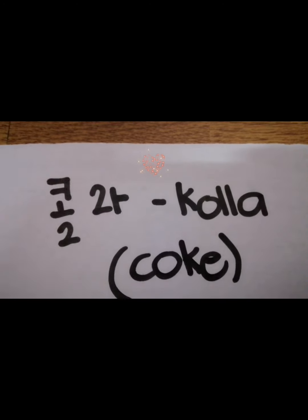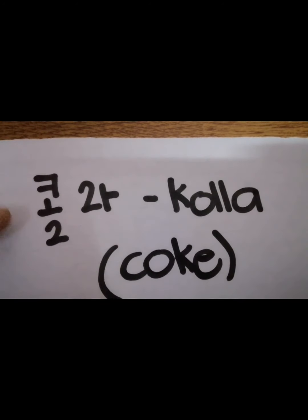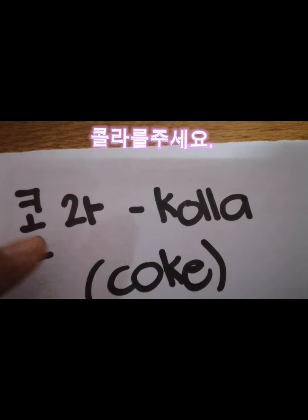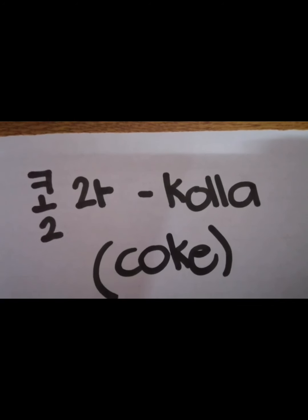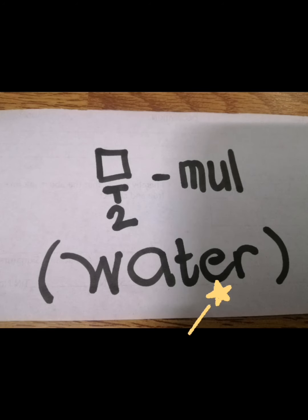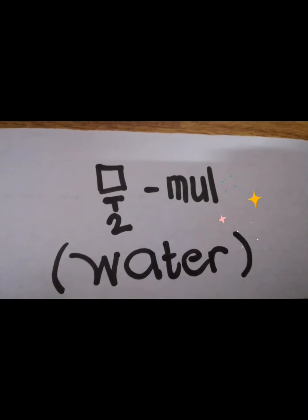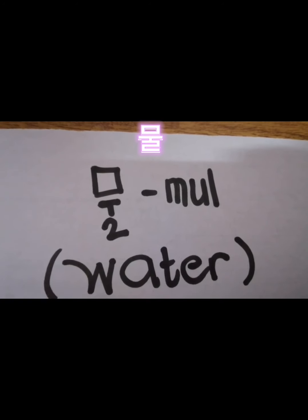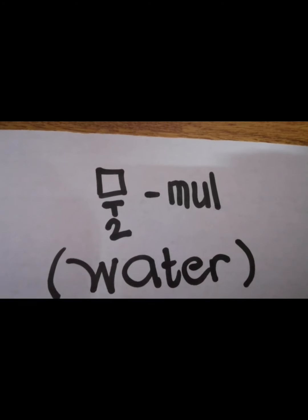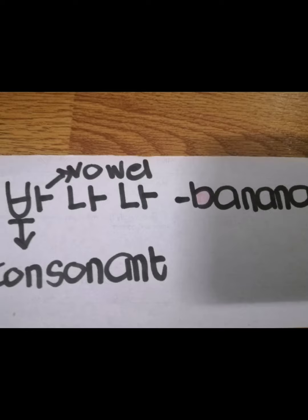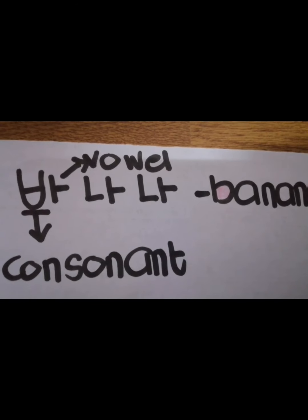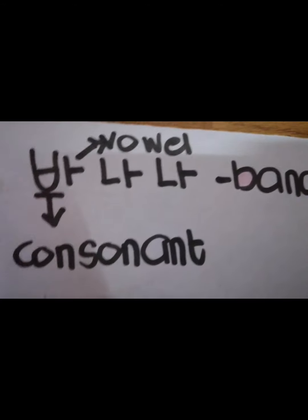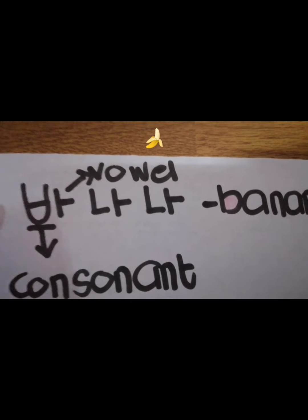콜라 means cola or coke. The first syllable consists of a three-letter word — 콜라. And 물 means water — a three-letter word we saw earlier as well.